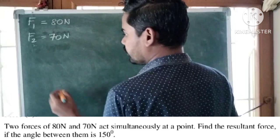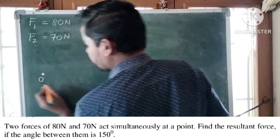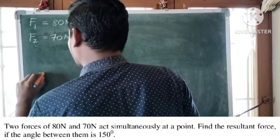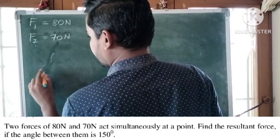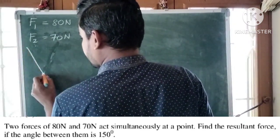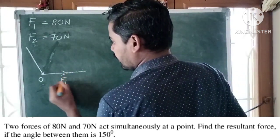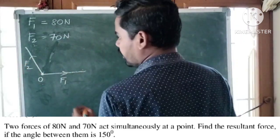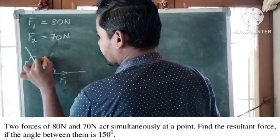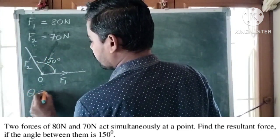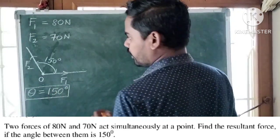Two forces acting at a point. Let us name it as O. This is force F1 and this is force F2. The angle between F1 and F2 is 150 degrees. Theta is equal to the angle between force F1 and F2, 150 degrees.